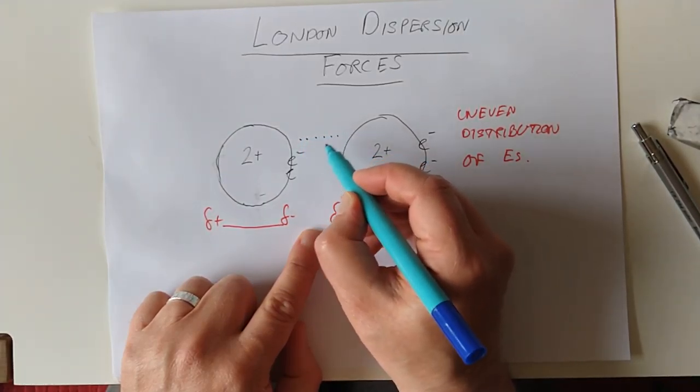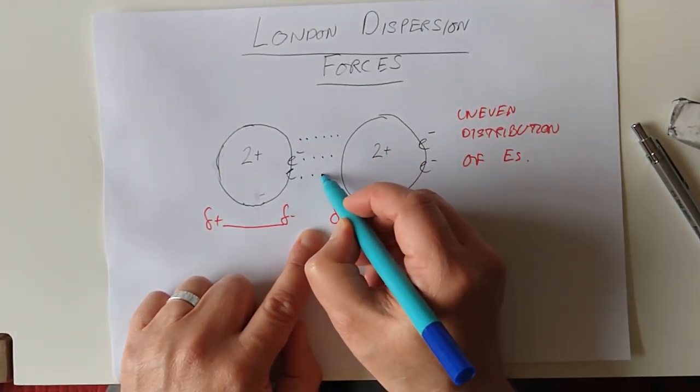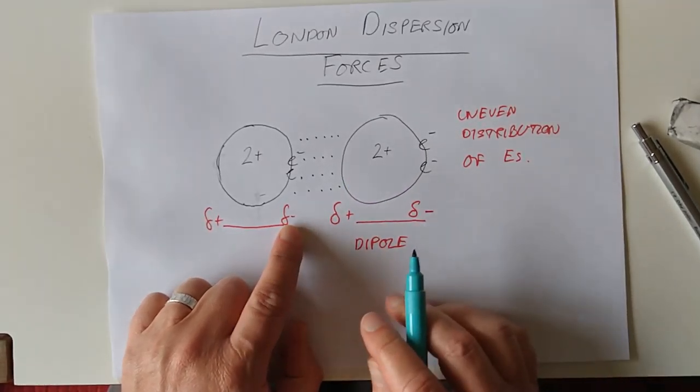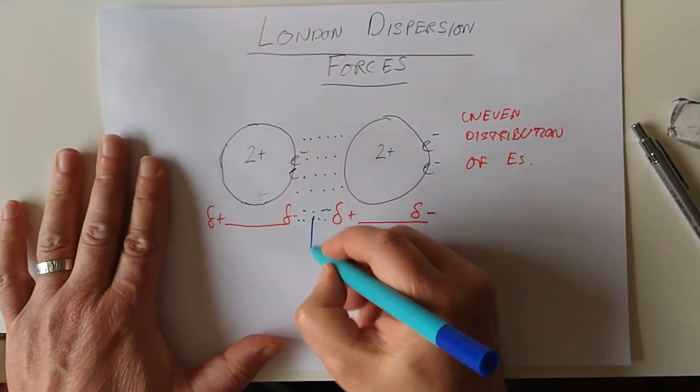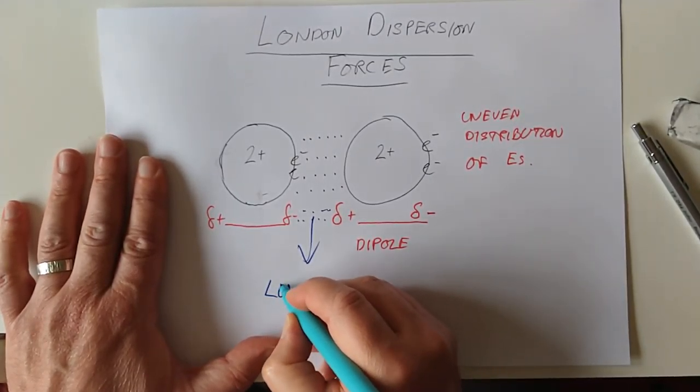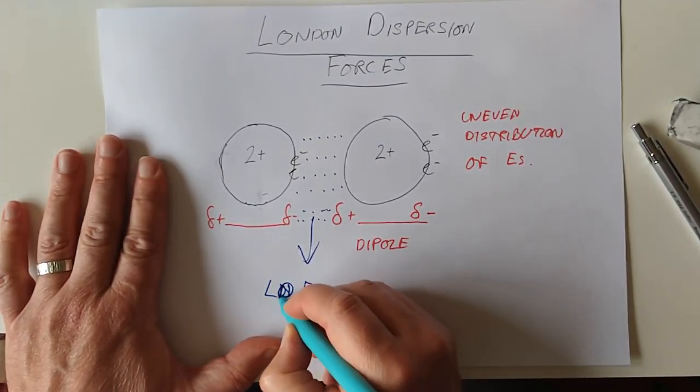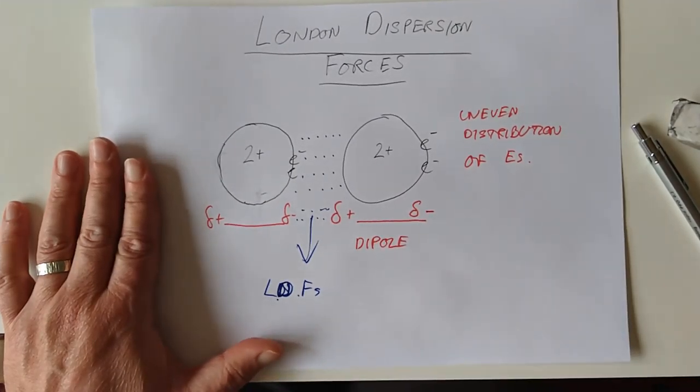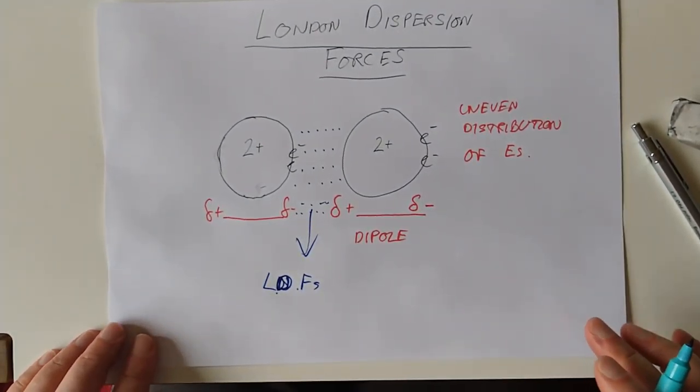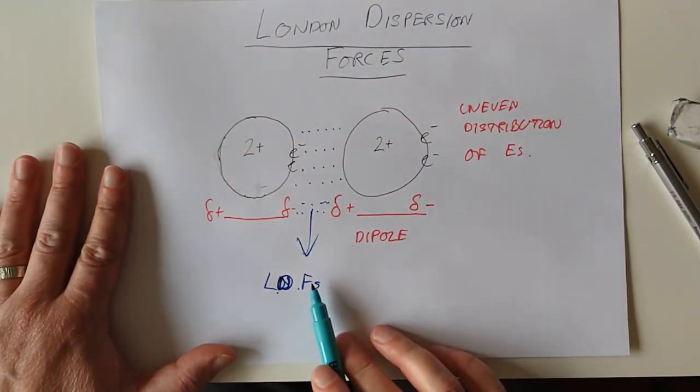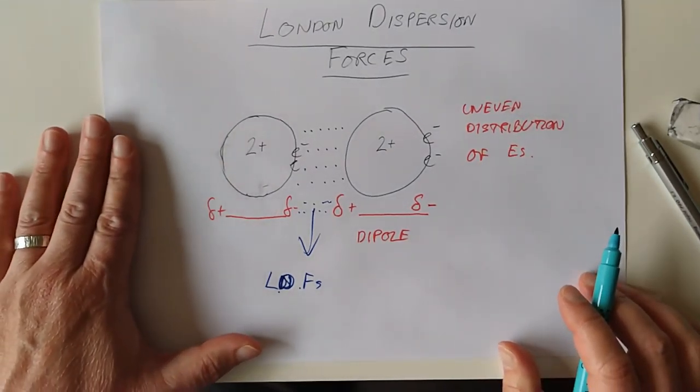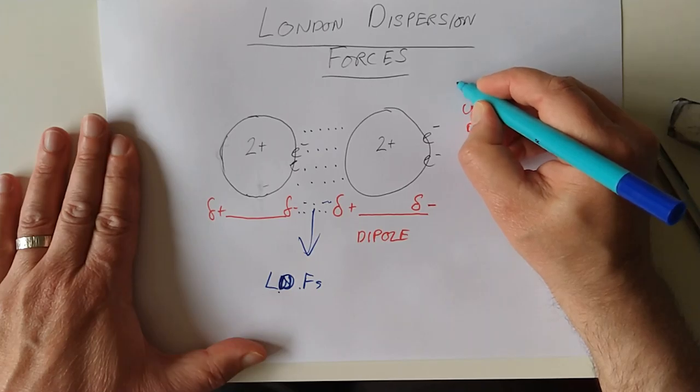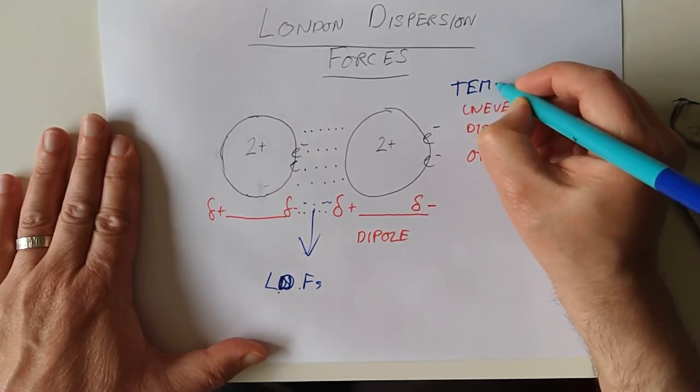We've created ourselves another small dipole, delta plus, delta minus. Now we see where London dispersion forces form. There is a very slight force of attraction between these two atoms, between their dipoles - the positive end of one and the negative end of the other. This is what causes London dispersion forces, an uneven distribution of electrons.